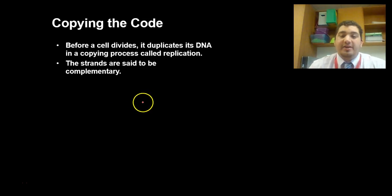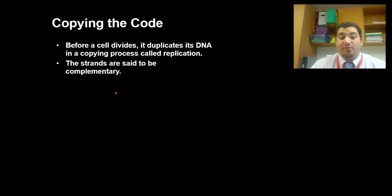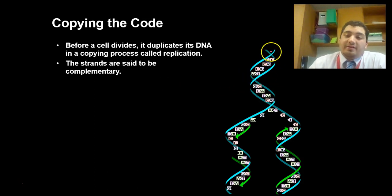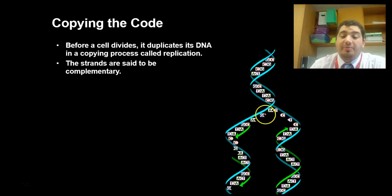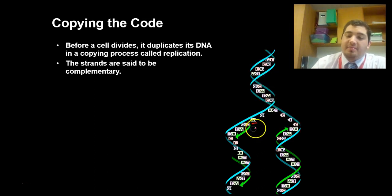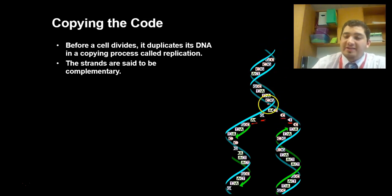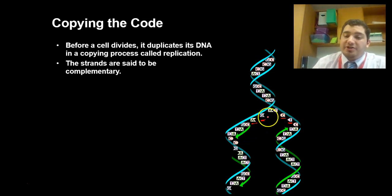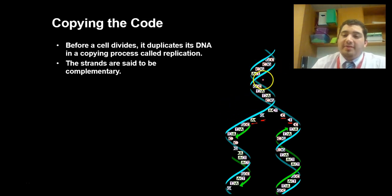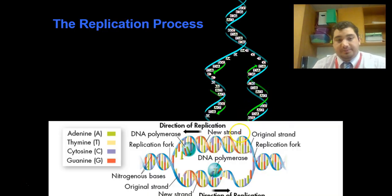When we talk about the DNA strands that are being copied, they are complementary. That doesn't mean they tell each other they look nice — it means they go together. There are two strands that come together to form a double helix. Each side of this double helix has a complementary nitrogenous base: every adenine (A) is paired with a thymine (T), and every guanine (G) is paired with a cytosine (C). Both sides of the DNA are complementary — they carry the same information because you have the same pairs on both sides.